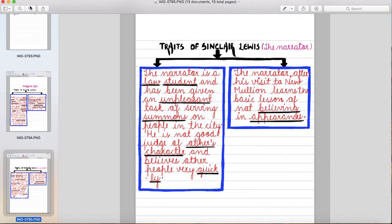Now let's see the traits of Sinclair Lewis who is the narrator. The narrator is a law student and has been given an unpleasant task of serving summons on people in the city. Ek task diya jata hai ki usko court ke orders logon tak le jane hai. He is not good judge of others character and believes other people very quickly. Woh logon ko judge karne mein zyada achha nahin hai aur logon ko bohut jaldi trust karta hai.